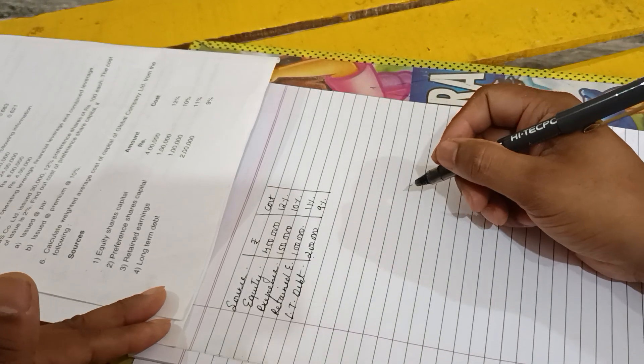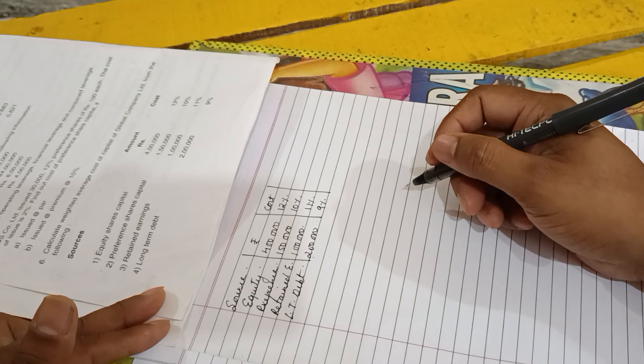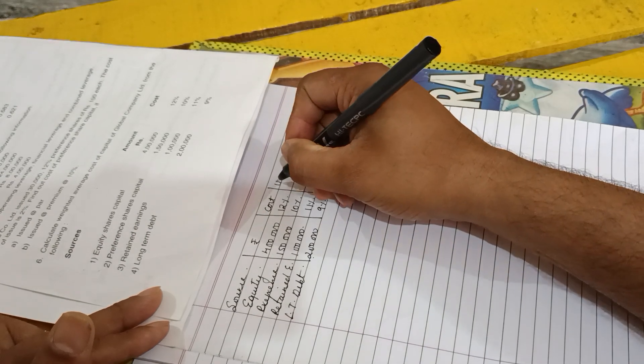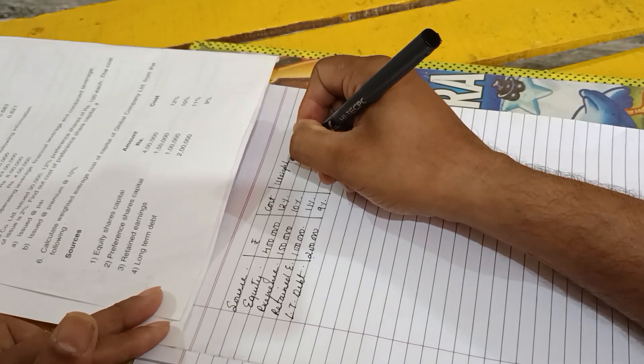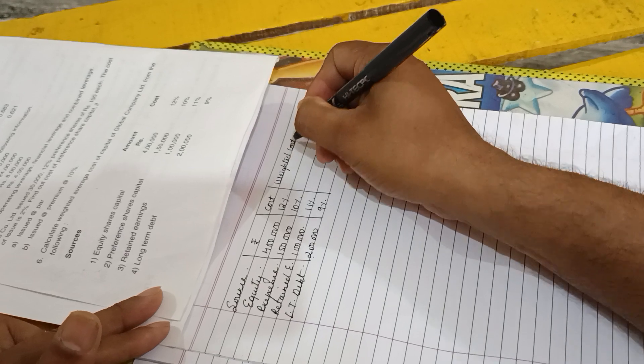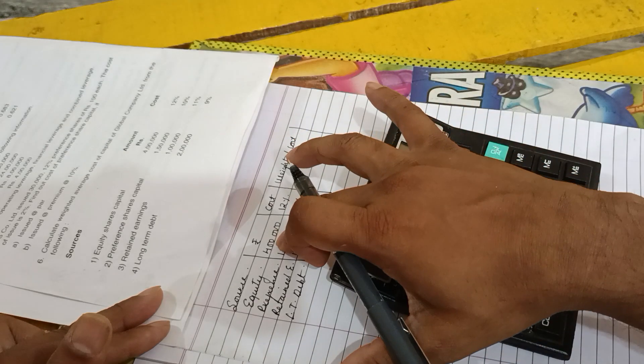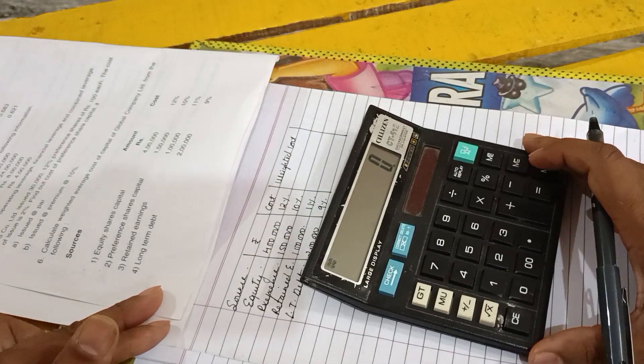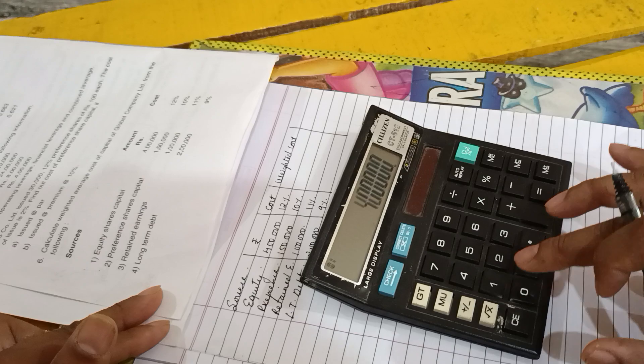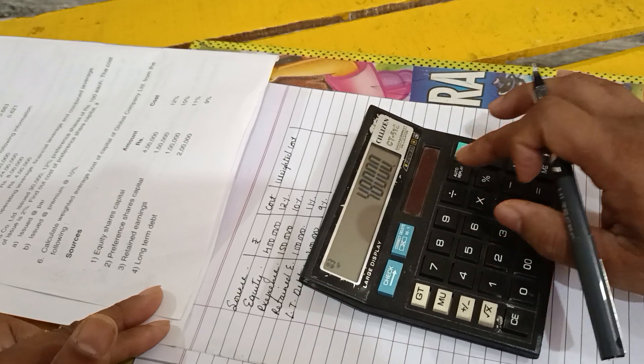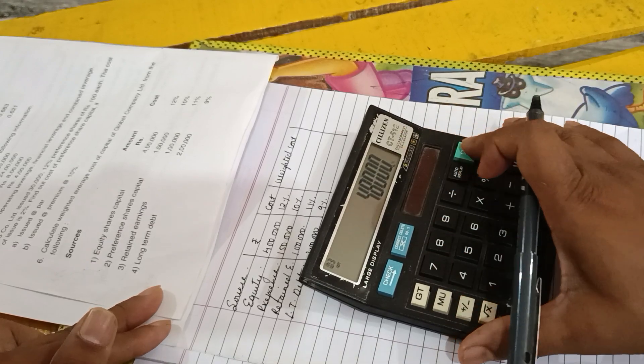Now the next column is the solution column, that is Weighted Cost. How to calculate this? It's very easy. Four lakh into twelve percent - the answer is forty-eight thousand.